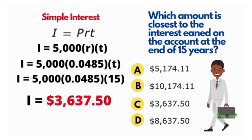Plugging in the numbers, we're going to get to use a calculator on this one, but that conversion of that percentage rate is probably the biggest mistake that most students make. Our correct answer: which amount is closest to the interest earned on the account at the end of 15 years? $3,637.50.